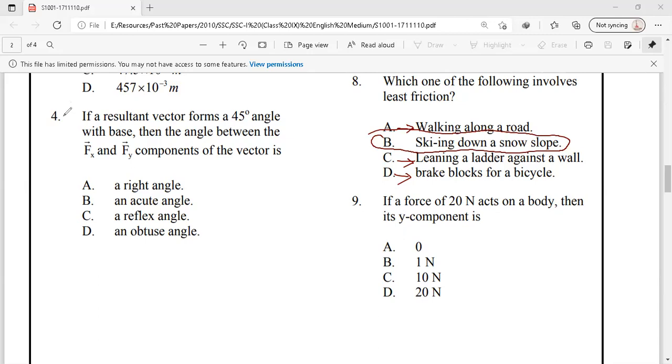We have question number 4, if a resultant vector forms 45 degrees. This is our resultant vector that makes 45 degrees, then the angle between fx and fy component of the vector will be. Remember that if the resultant vector makes an angle, fx and fy, horizontal component and vertical component, these two always make 90 degrees. Option A is the right answer.